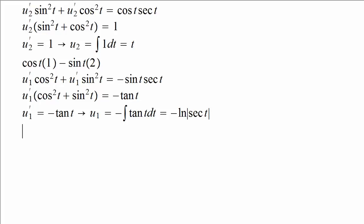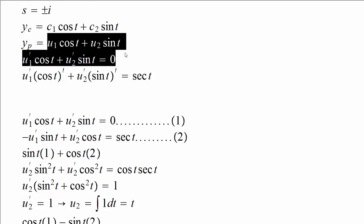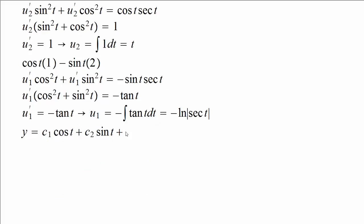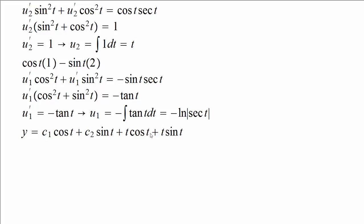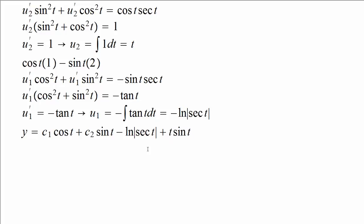Now we write the general solution as the complementary function plus the particular integral. The particular integral used u₁ = -ln|sec(t)| and u₂ = t. So the general solution is y = c₁cos(t) + c₂sin(t) + (-ln|sec(t)|)cos(t) + t·sin(t).